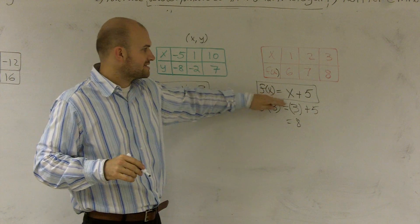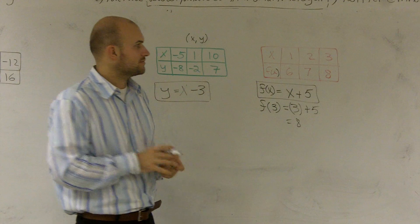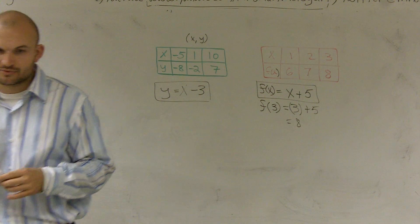The rule for this one is f of x equals x plus 5. It doesn't matter. Like I said, the f of x and the y are just interchangeable with each other. I could have changed that up and added it there. But that's how you find the rule with addition and subtraction.